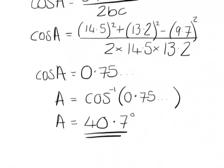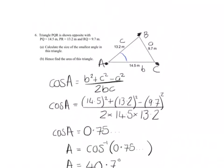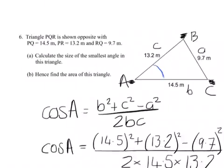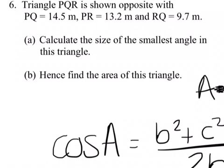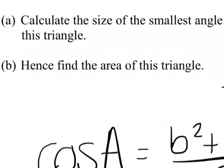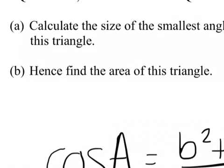Now that's us finished with part A. Part B asks us to, hence, find the area of the triangle. Now to find the area of the triangle, we need another formula, which is area A is a half ab sin C.